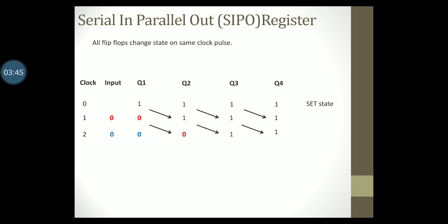Now let us say I give serial input as 1. On the next clock pulse, this 1 will appear at the output on Q1. The value at Q1 will get shifted to Q2. The output at Q2 will further get shifted to Q3 and the output at Q3 gets shifted to Q4. The parallel output at the register now reads as 1 0 0 1. All this is happening on the third clock pulse.